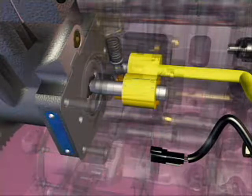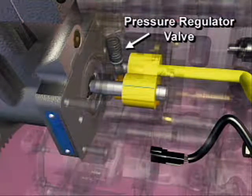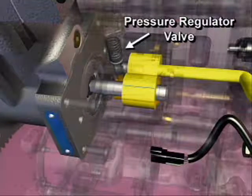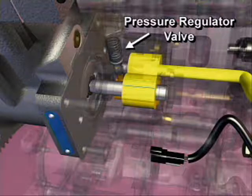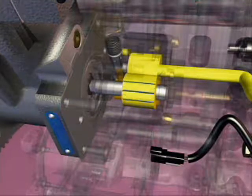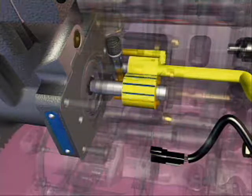Before the fuel leaves the gear pump, it passes a pressure regulator valve. When fuel pressure is above 175 psi, it acts against spring tension to open the valve. The fuel is returned to the inlet side of the gear pump.